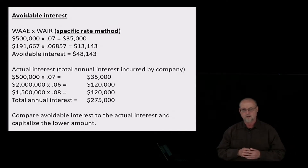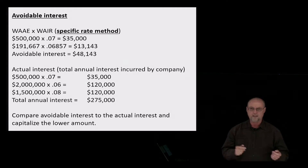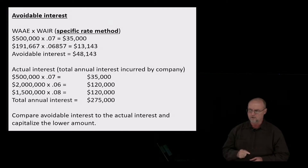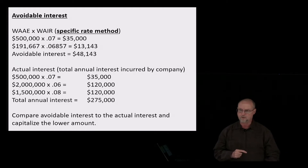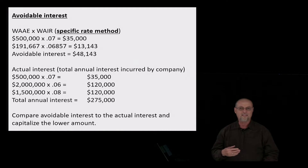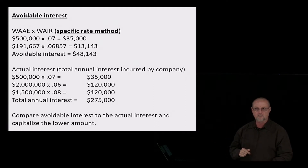Remember what I said earlier — we take the lower number between avoidable interest and actual interest. So we have to look at actual interest for this company for this year. We had three loans: $500,000 at 7%, $2,000,000 at 6%, $1,500,000 at 8%. Adding up the total interest for the year gives us $275,000. So the avoidable interest of $48,143 is clearly the lower amount, and that's what we're going to add to the project's cost on the balance sheet at the end of the year.